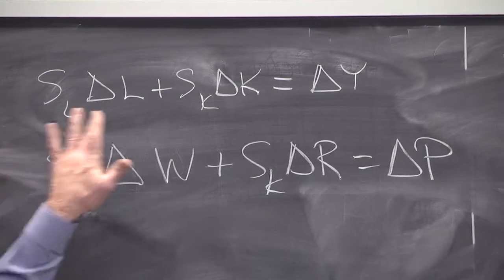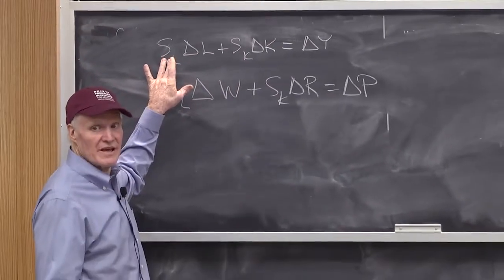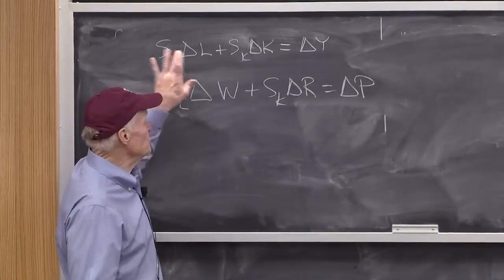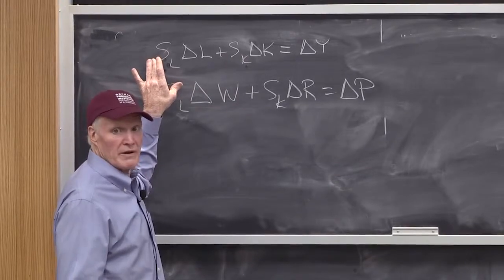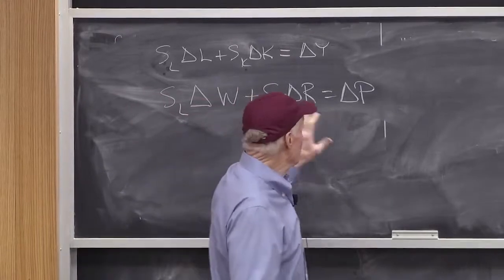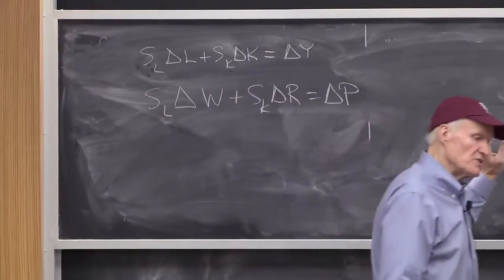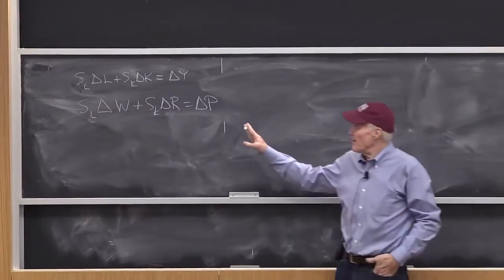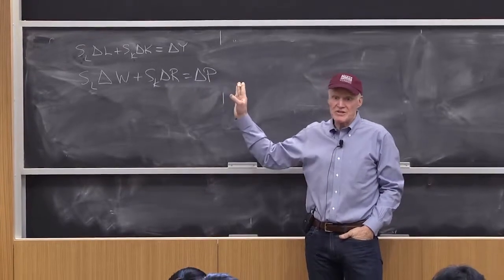This one actually doesn't assume constant returns to scale. It's just that these shares won't necessarily add up to 1 if you didn't have constant returns to scale. They might not sum to 1. But this one does assume constant returns to scale. If you don't have constant returns to scale, this equation is going to change.